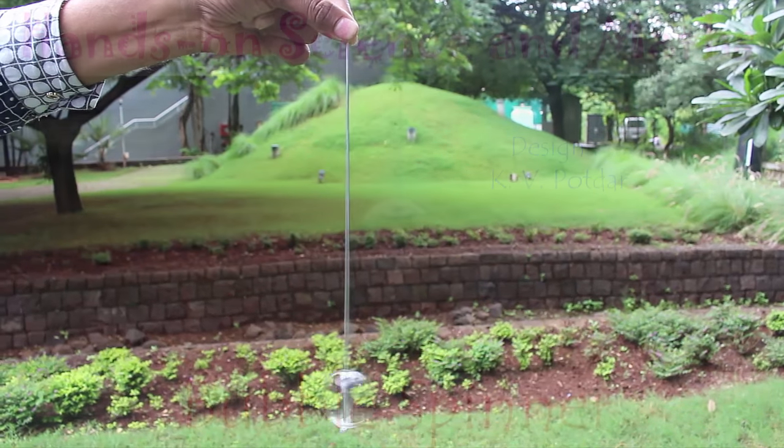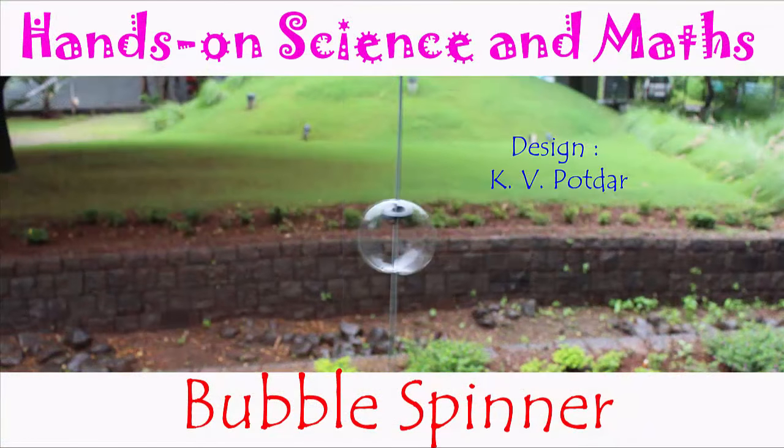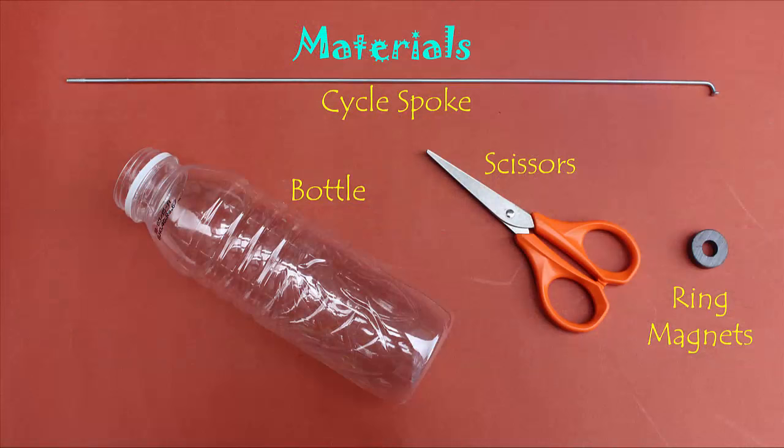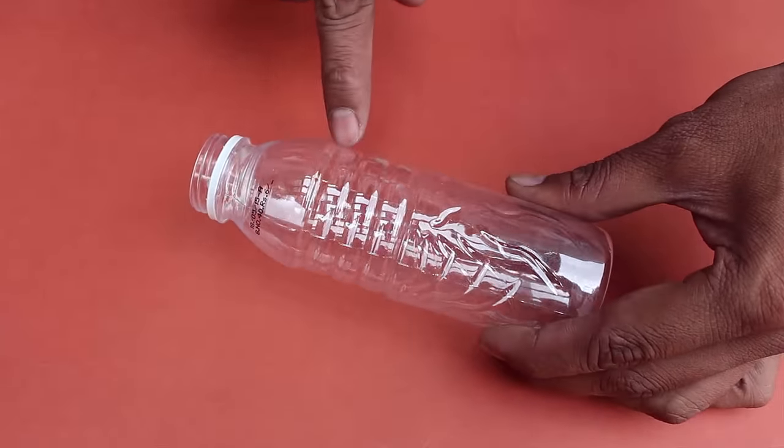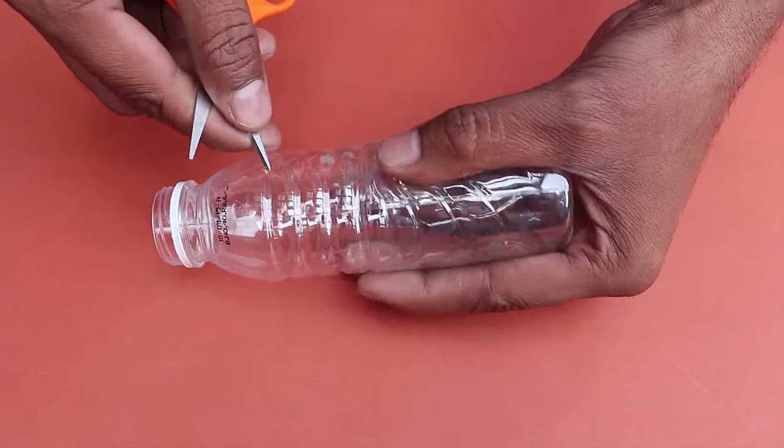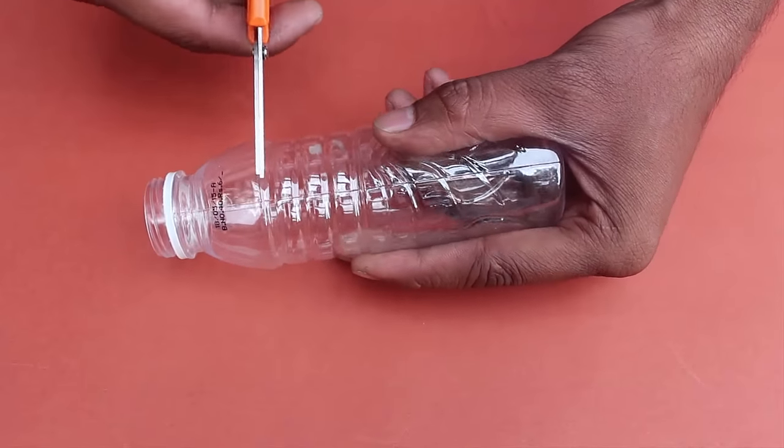In this splendid toy, you really see a bubble spinning down. It's quite an amazing sight. To make the bubble spinner, you just need a few things: an old 250 ml plastic water bottle, cycle spokes, scissors, and a ring magnet.